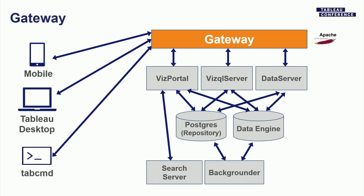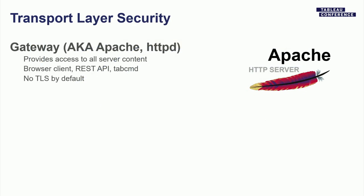Let's start with the gateway. In a simplified diagram of our server architecture, on the left side we have clients that talk to the gateway, and the gateway relays requests to Tableau Server's backend services. These clients can be someone in a web browser, someone using Tableau Mobile, someone publishing from Tableau Desktop, or a user of tabcmd — our command-line client tool. The gateway exposes APIs for all of these clients to use, then sends requests to the backend to be processed.